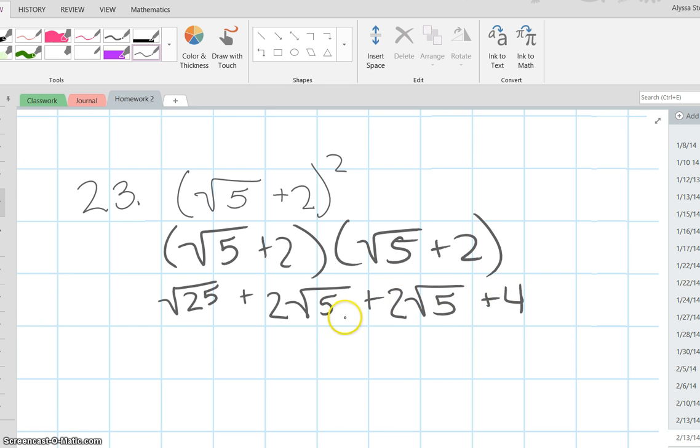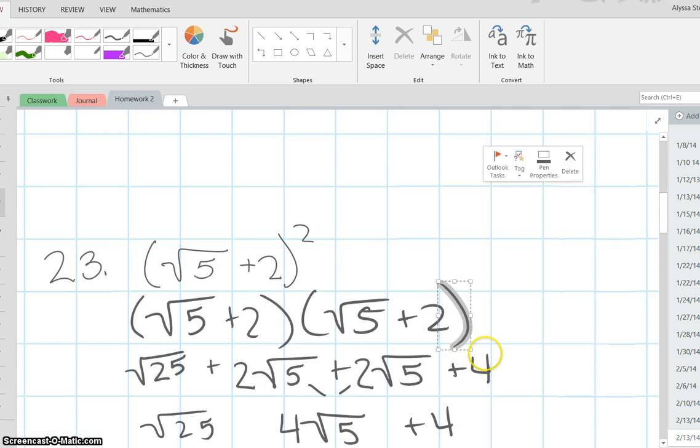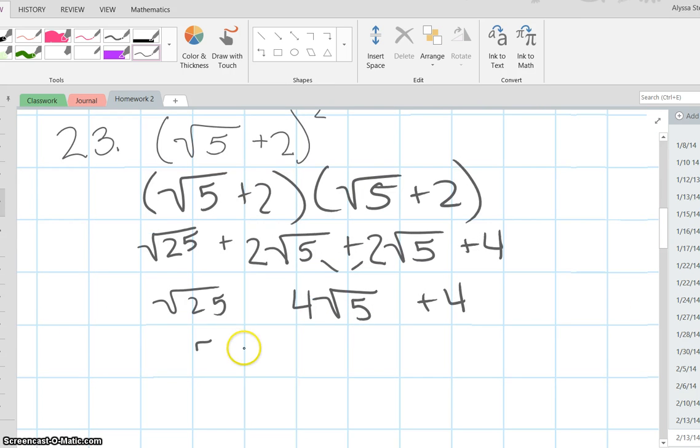So then you can combine some things. This equals the square root of 25 plus 2 times the square root of 5 plus 2 times the square root of 5 plus 4. The square root of 25 is 5, so that's 5 plus 4 times the square root of 5 plus 4.